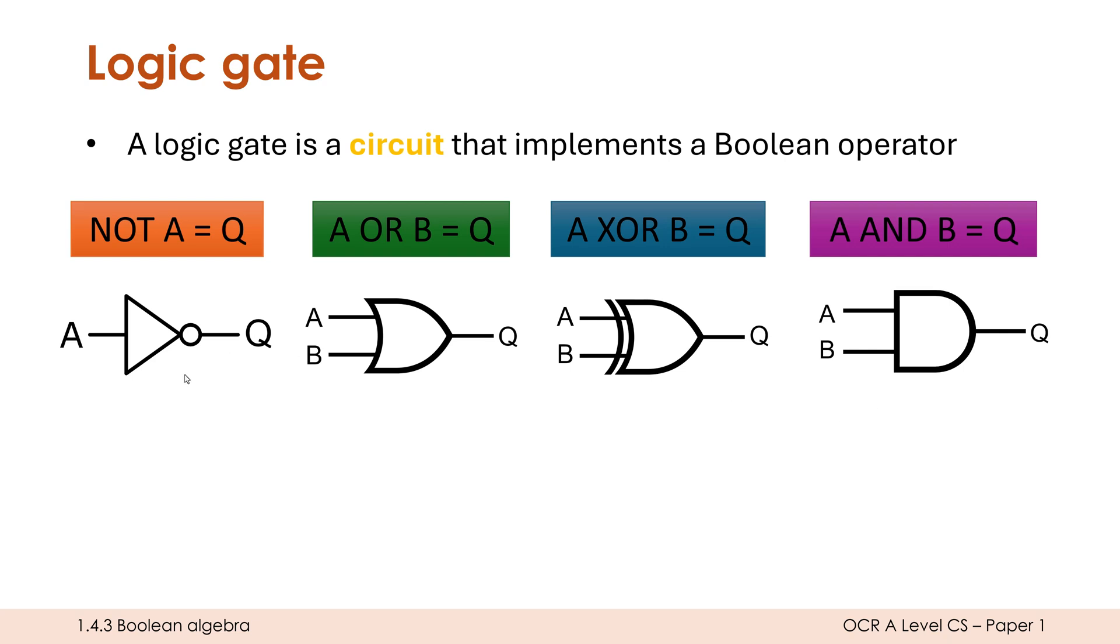You need to learn the shapes of these logic gates and what they represent. So NOT only has one input but triangle and a circle at the end. Don't forget the circle, that is part of it. XOR and OR are very similar in operation. XOR is just our more exclusive version. The only difference is we've got another curved line at the back of XOR. XOR is kind of like a crescent moon-ish, that's how I think of it, whereas AND has got this vertical line on the left-hand side, and that's our four logic gates to learn.